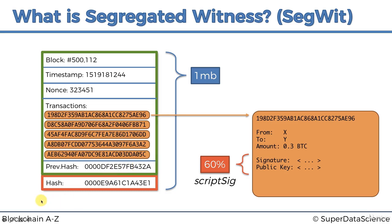The scriptSig will still be linked to each block and each transaction, but it will go through the network separately. That way we save space — each transaction reduces substantially in size and we can fit in more transactions. SegWit was adopted by the Bitcoin blockchain network on the 24th of August 2017, and slowly more and more nodes started sending SegWit-type blocks. Because it's a soft fork, it's backward compatible — even nodes that didn't accept SegWit still participate and everything works fine.